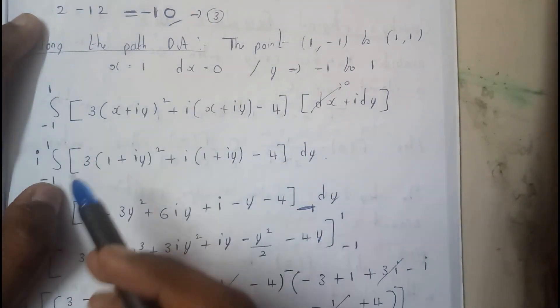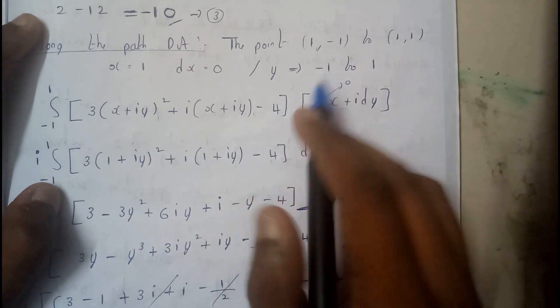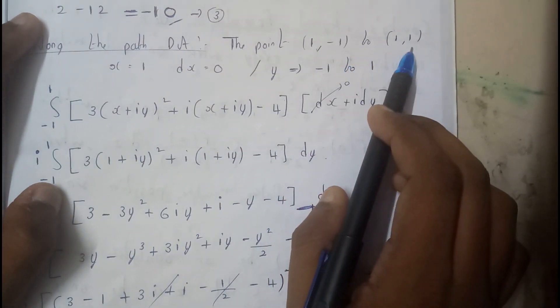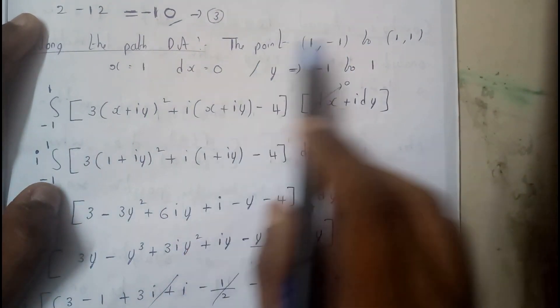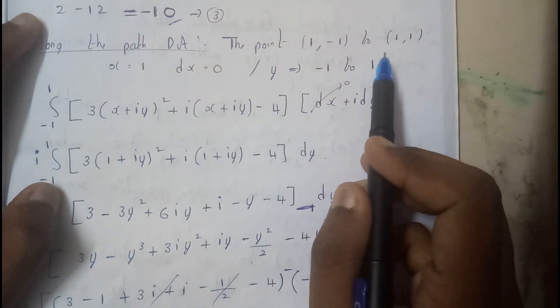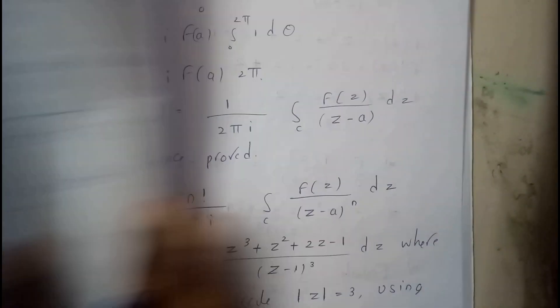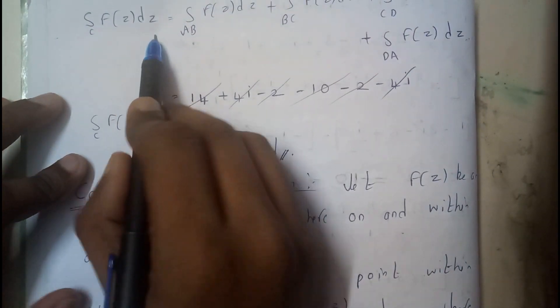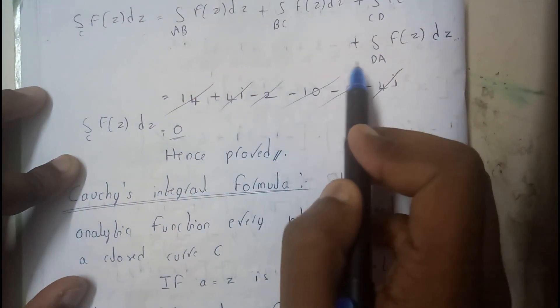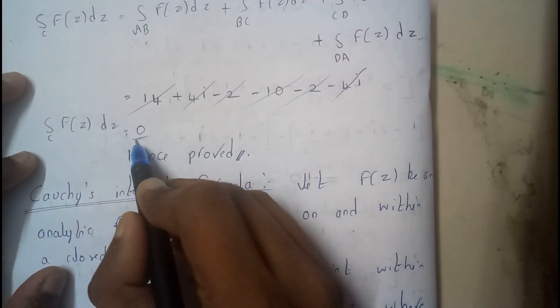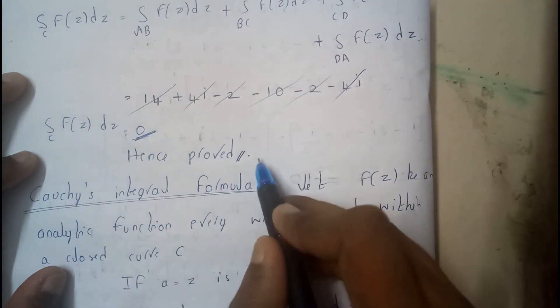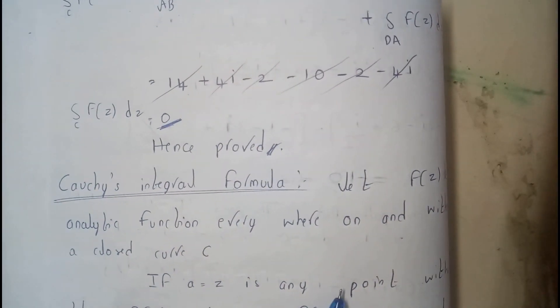For the last side DA, the points are (1,−1) to (1,1), where x = 1 is constant and y varies from −1 to 1. Converting the problem in terms of y and substituting the values, we get the result. Adding all four path integrals — AB, BC, CD, and DA — everything cancels and we get 0, hence proving Cauchy's integral theorem.